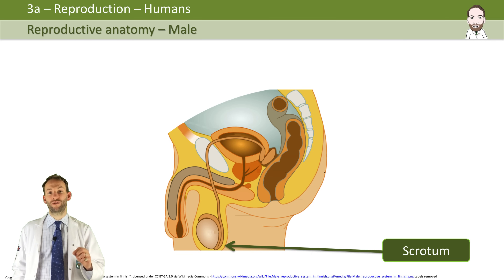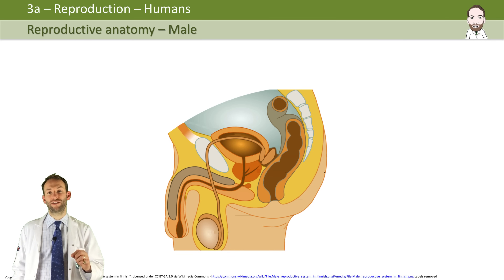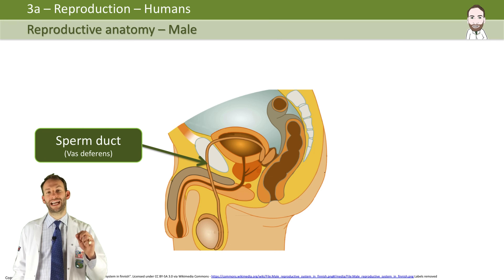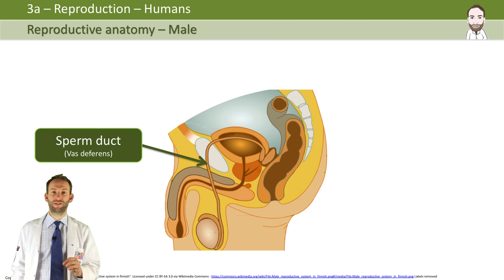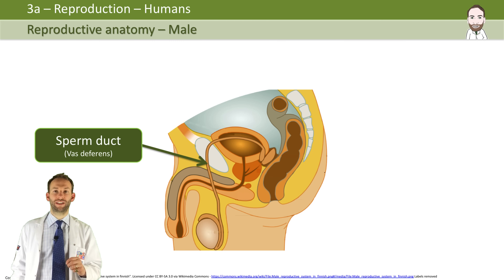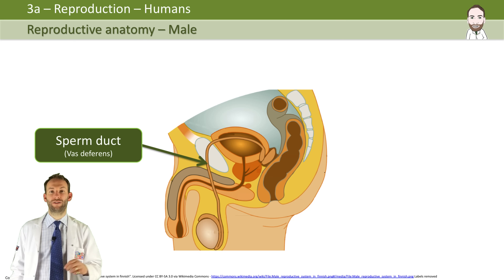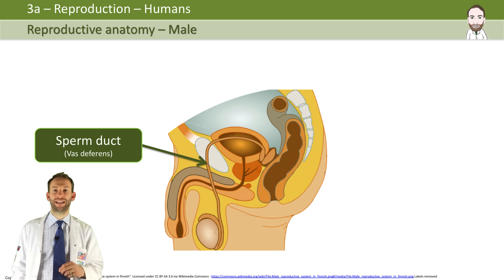The sperm duct, or the vas deferens, is the tube that carries the sperm up and out of the testes and around during ejaculation to then go out of the penis.